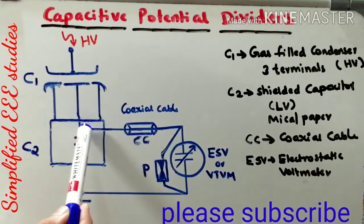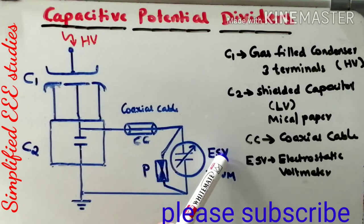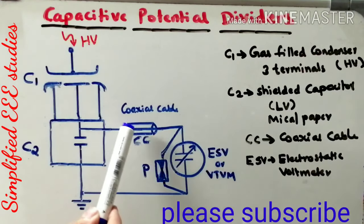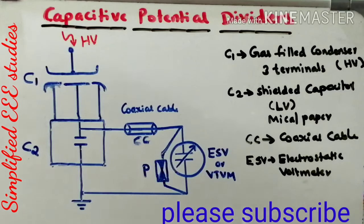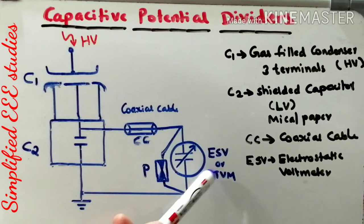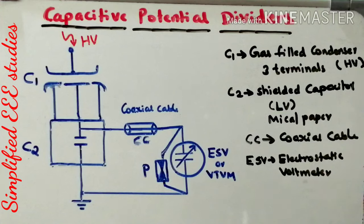This capacitor C2 is made up of either Mica or Paper. The output of the low voltage capacitor C2 will be directly connected to an Electrostatic Voltmeter, or you can go for a Vacuum Tube Voltmeter — VTVM. This connection is made through a Coaxial Cable or Delay Cable. You are able to get the reading from the Electrostatic Voltmeter, which is proportional to the applied voltage. The applied high voltage will be directly proportional to the reading obtained from this meter, which may be either ESV or VTVM.